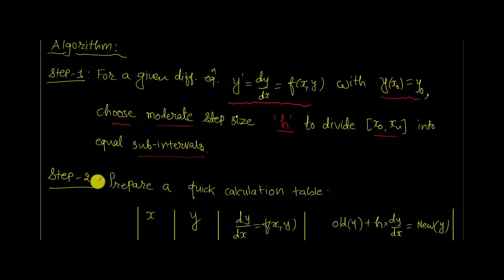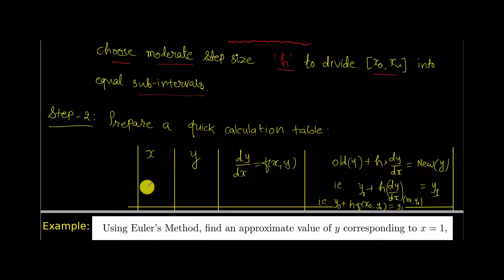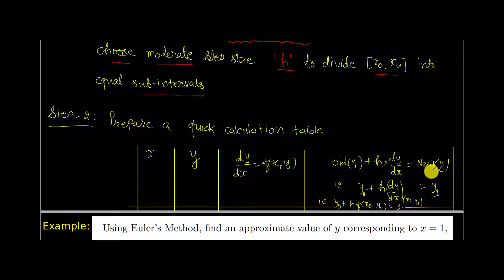In step number two, the quickest way is to consider a calculation table: columns for x, y, and f, then the formula: y_{i+1} equal to y_i plus h times f of x_i, y_i. So I write x value, then the corresponding y value from the statement, and from the statement I also have f of x, y readily available. Using these three values I obtain the new y. I use y0, dy by dx evaluated at x0, y0, and the chosen step size to get y1. Continue this process till the desired accuracy is reached.